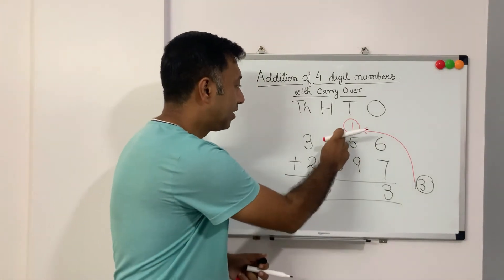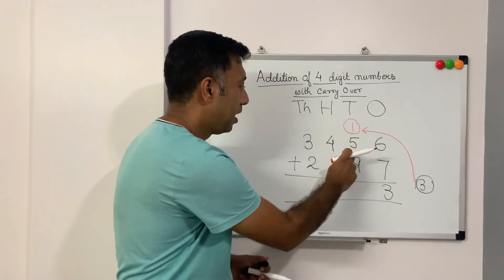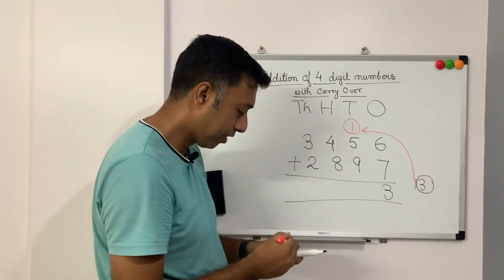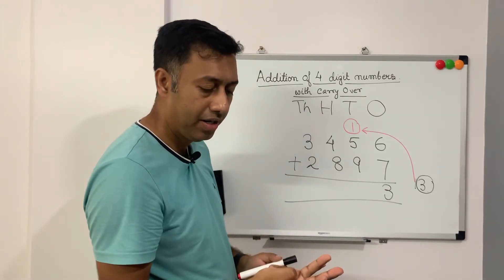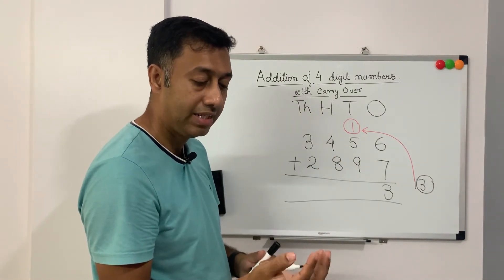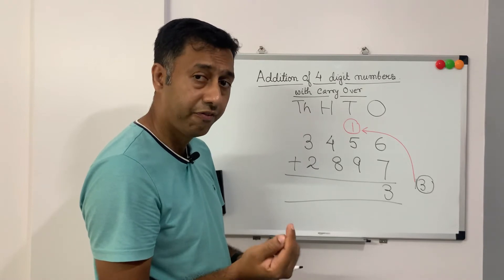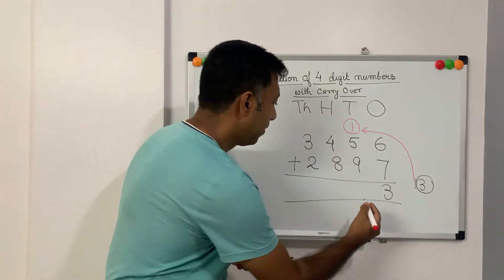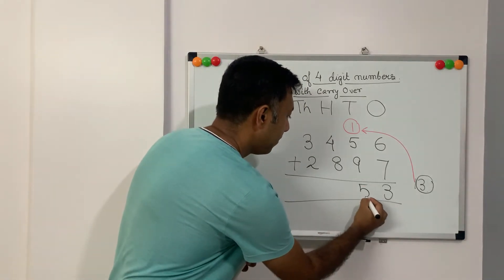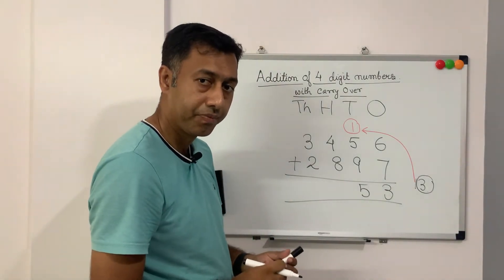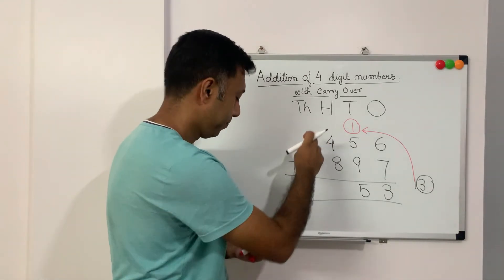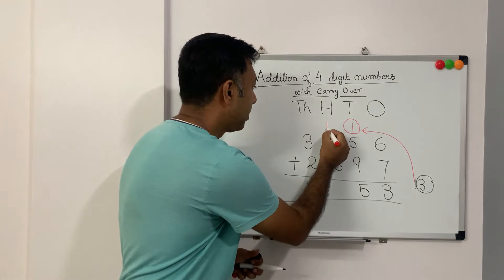So now we have to add three numbers. 5 and 1 and 9. So let us do it first. 5 plus 1 is 6 plus 9. It is 15. So again, how do we write 15 here? We will write 5. But what happens to the 1? You are right. 1 goes here as a carryover. Okay. So let us write the 1 here.